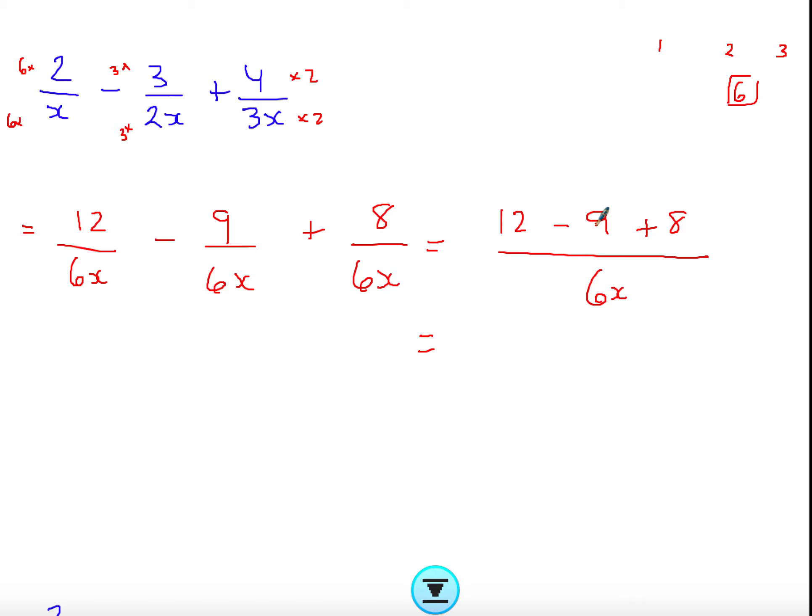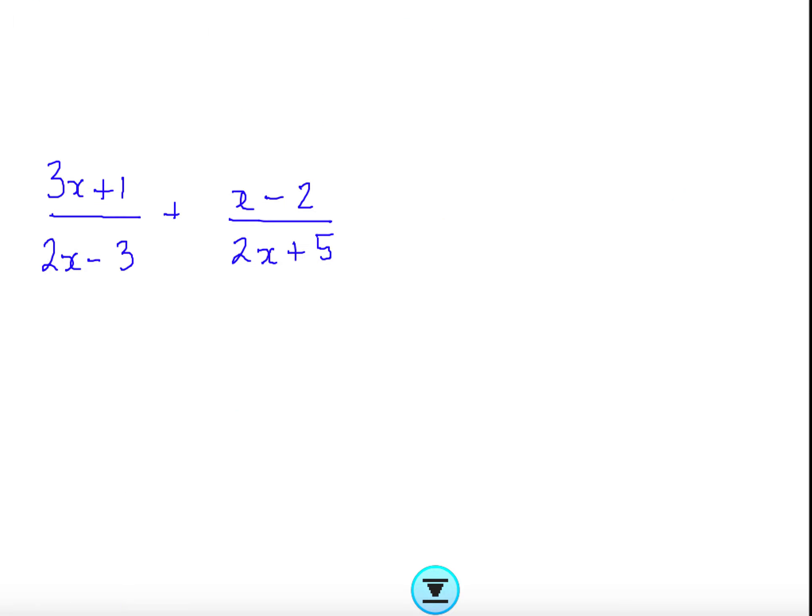Then you just simplify. I have 12 minus 9 plus 8, and that's going to give me 11 over 6x. That's as simple as it gets.